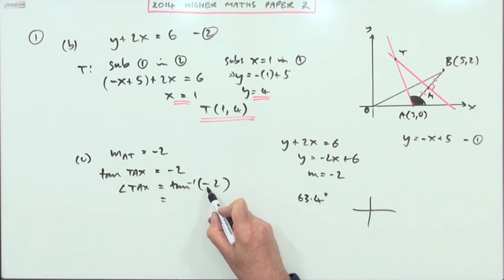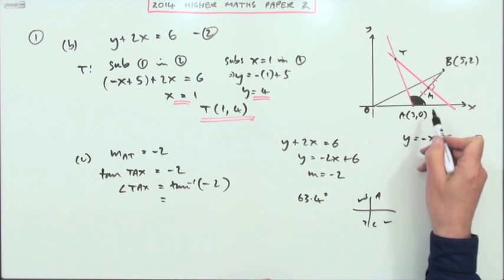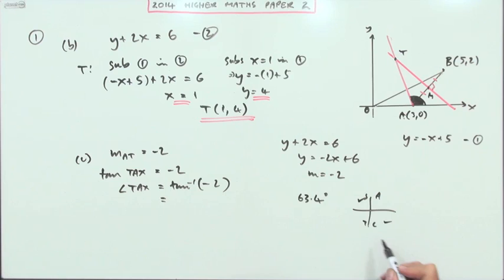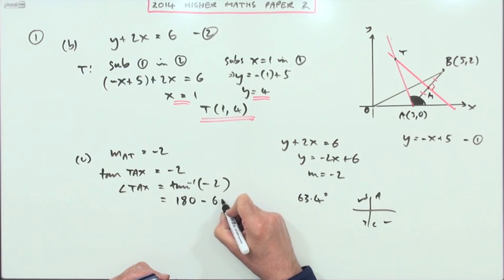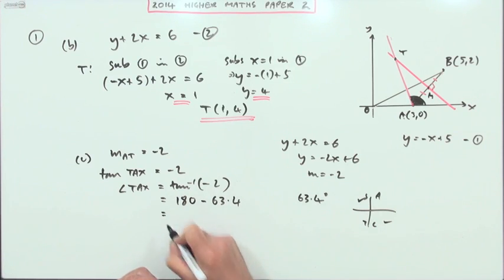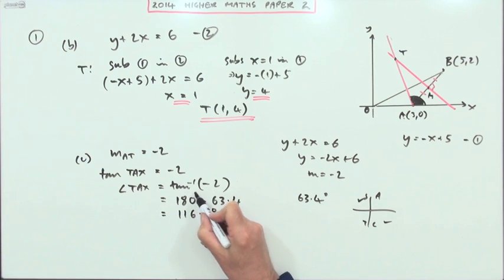That means it's either going to be here or here, but it's an angle less than 180, so it's in the second quadrant. So it'll be 180 - 63.4 = 116.6°. There it is, question one.